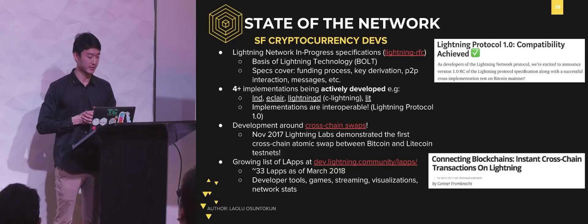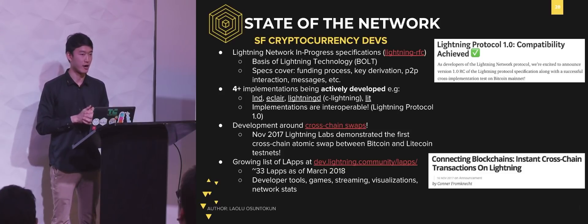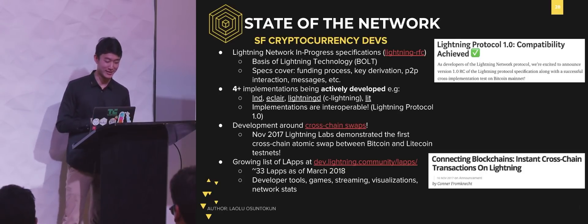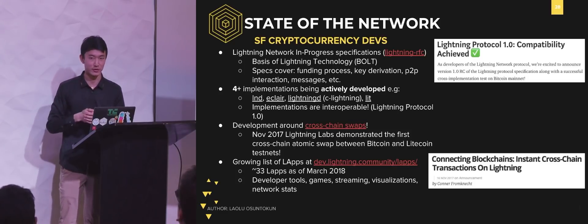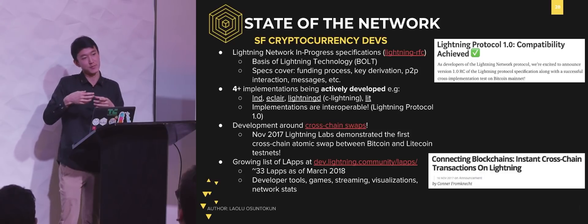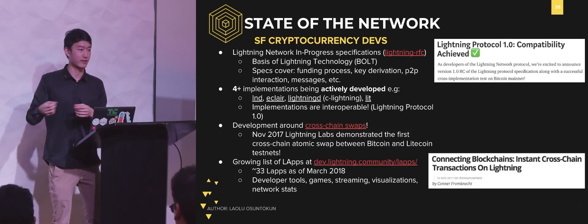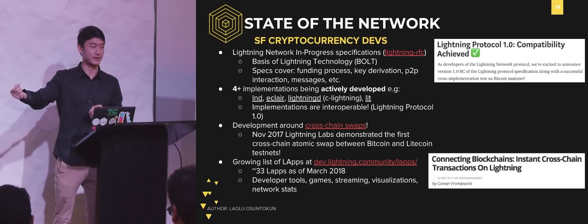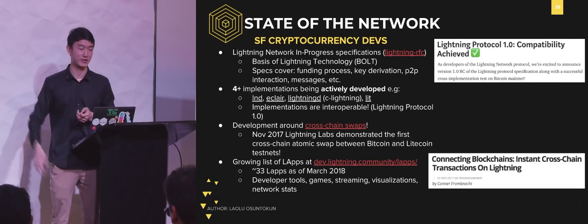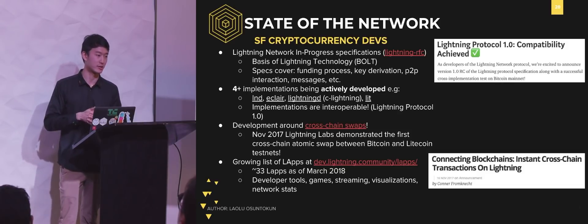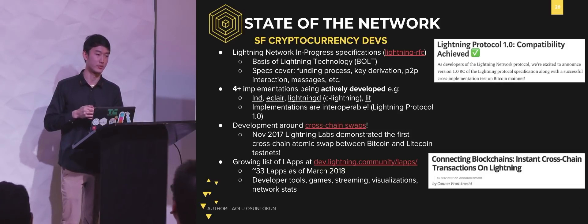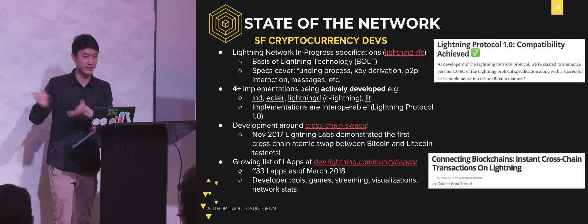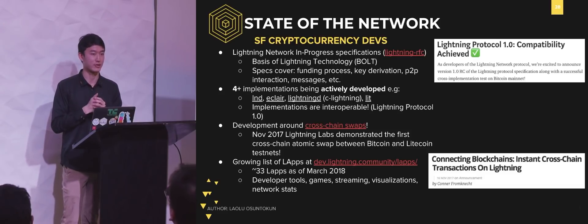Some exciting recent developments: we did the first ever off-chain cross-chain atomic swap between Bitcoin and Litecoin testnets. That has huge implications — it's kind of like combining the network effects of different cryptocurrencies together. If Bitcoin has a Lightning network and Litecoin has a Lightning network, then holding only Bitcoin, I can pay people on the Litecoin Lightning Network in an instant exchange. There are still some problems to solve, like how to make the order book decentralized and create this exchange rate market, but this is something I'm personally very excited about. The developer community around the Lightning Network is also growing — we have a list of what we call LAPs (Lightning apps) — 33 LAPs on this page that you can check out, from developer tools to games to video streaming to visualizations of the Lightning Network itself.